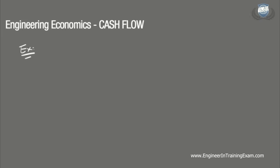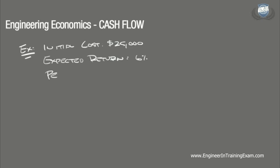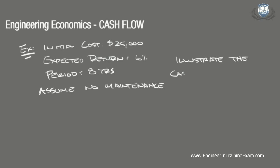So let's run through a quick example. A small business owner took out a loan to cover the purchase of a new piece of equipment for their assembly line. The equipment had an initial cost of $25,000 to purchase and was expected to return 6% annually on the original purchase price over the first eight years. Assuming no maintenance costs were experienced over the eight years, illustrate the cash flow diagram that best represents the scenario from the business owner's point of view.